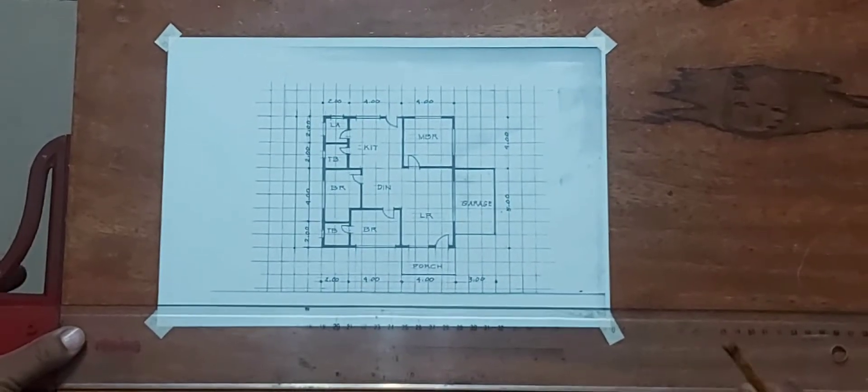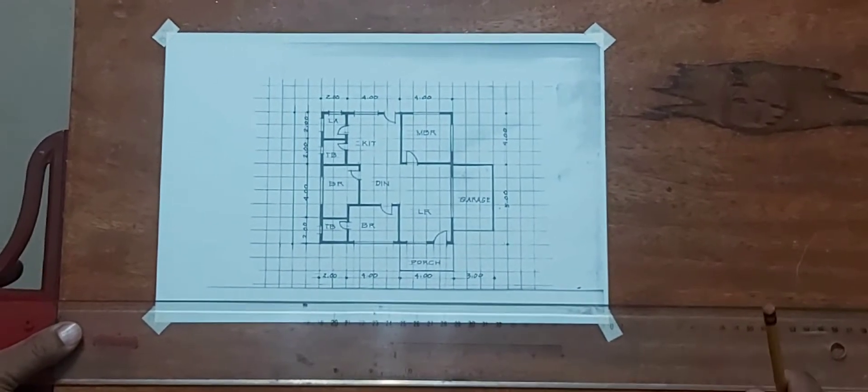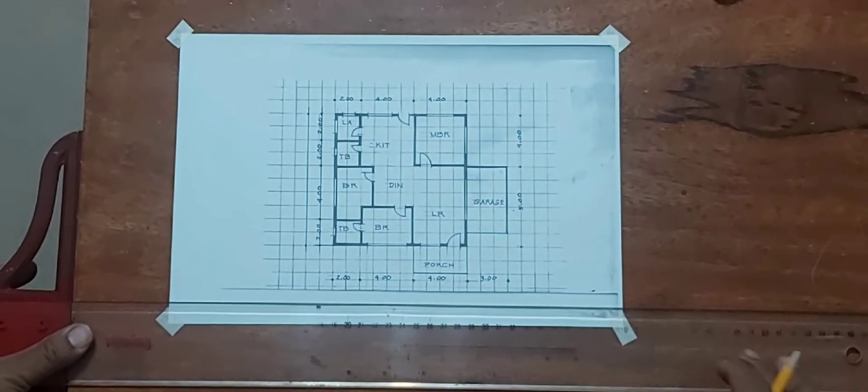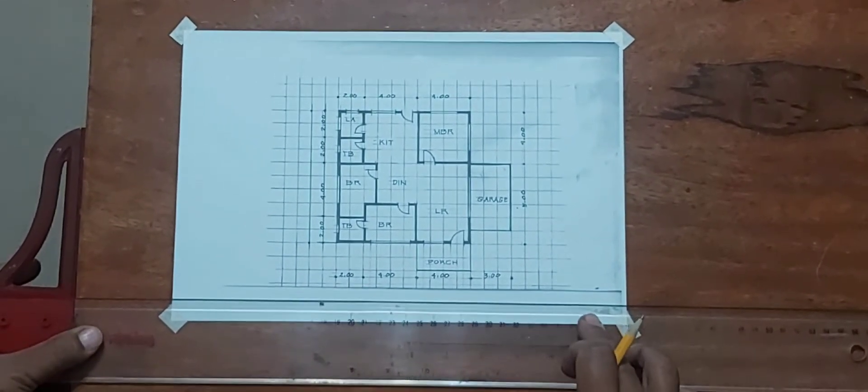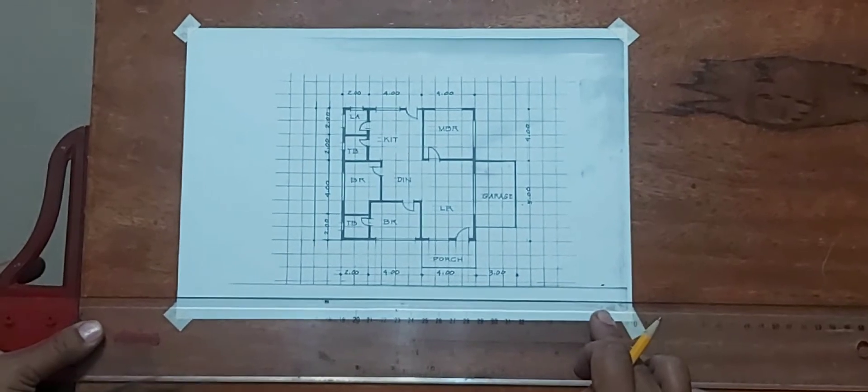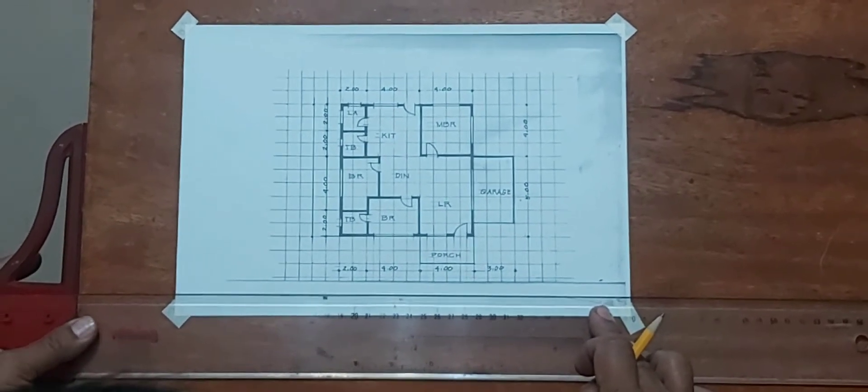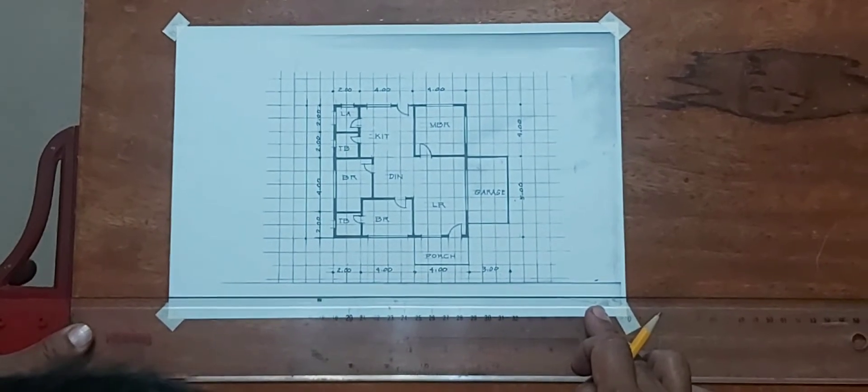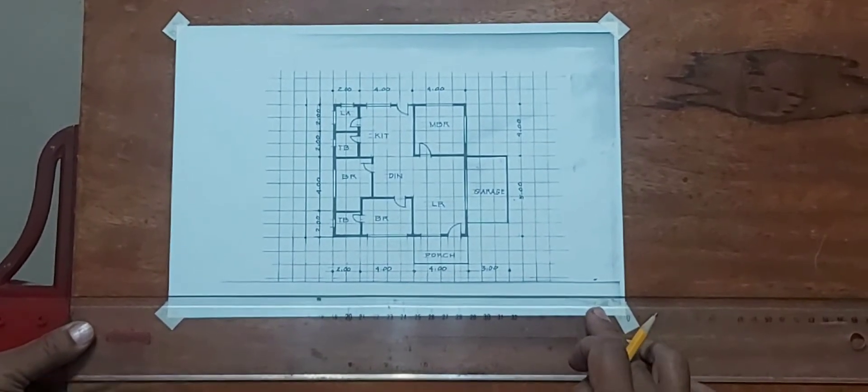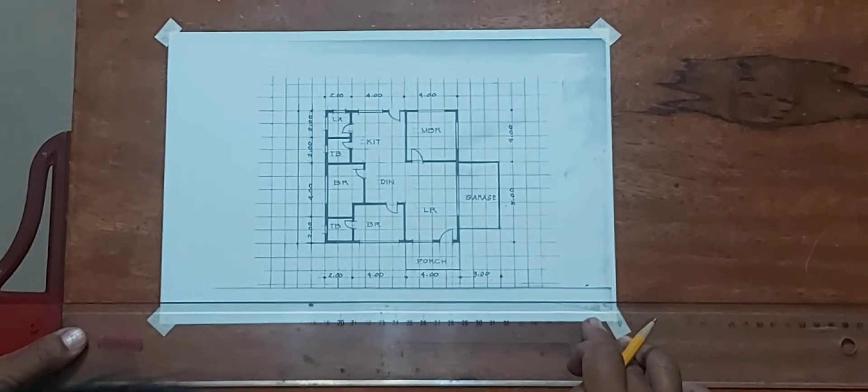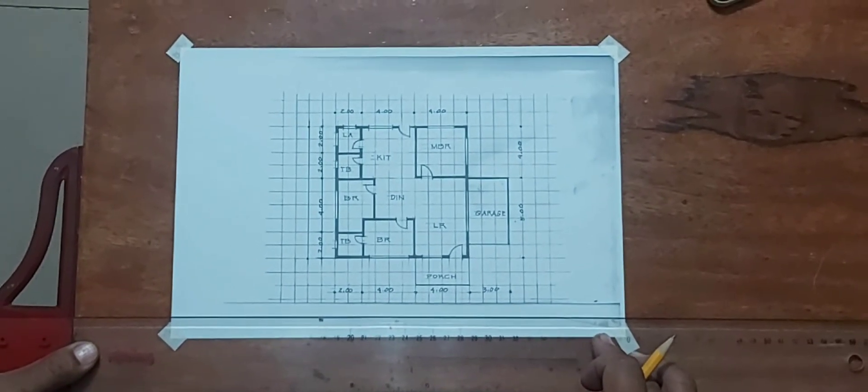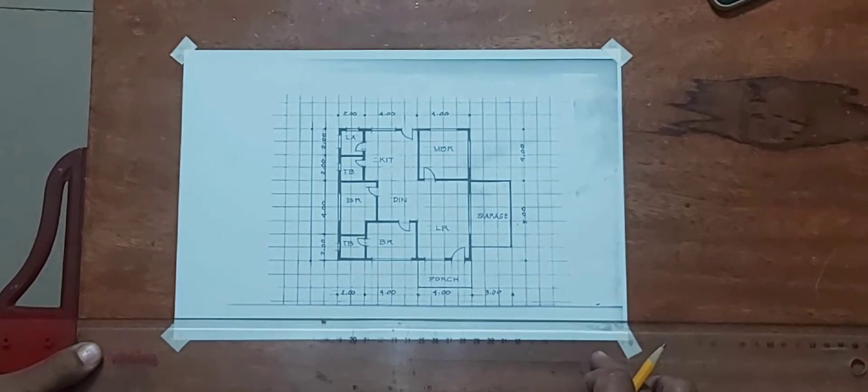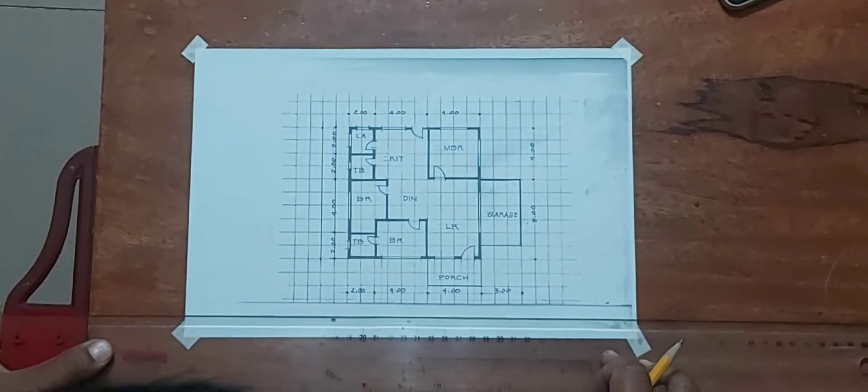Before drafting the sprinkler layout, of course you should have the pre-drawn floor plan. So I have with me my floor plan, and as you can see, there are a lot of lines here. These are the grid lines that I have done in following the scale. But anyway, you just have to disregard this in doing the sprinkler layout.